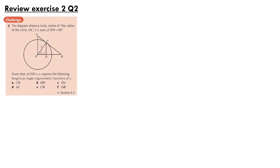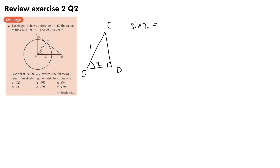For question 2, the diagram shows a circle, centre O. The radius OC is 1, and the angle CDO is 90 degrees. Given that the angle COD is x, express the following lengths as single trigonometric functions of x. For part A, CD: drawing triangle OCD with OC equal to 1, we use sine. Sine of x equals opposite, which is CD, over 1. So CD equals sine x.